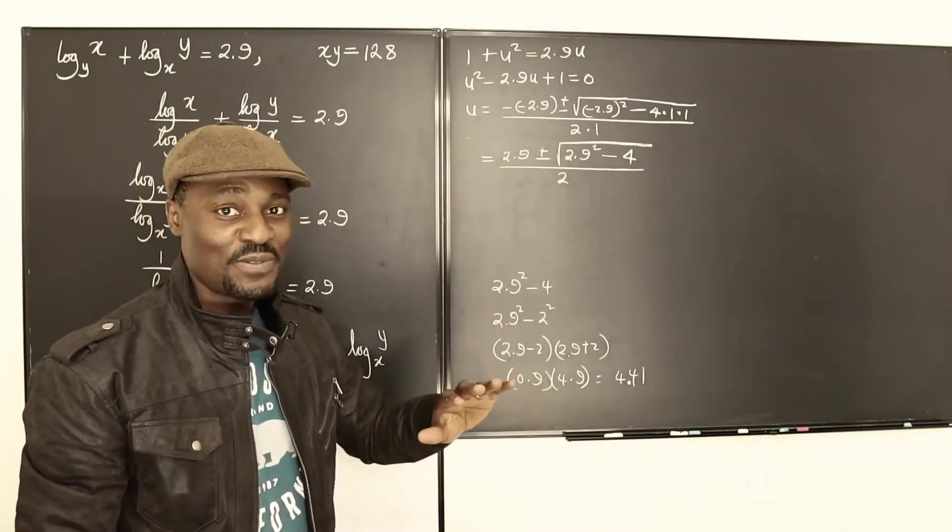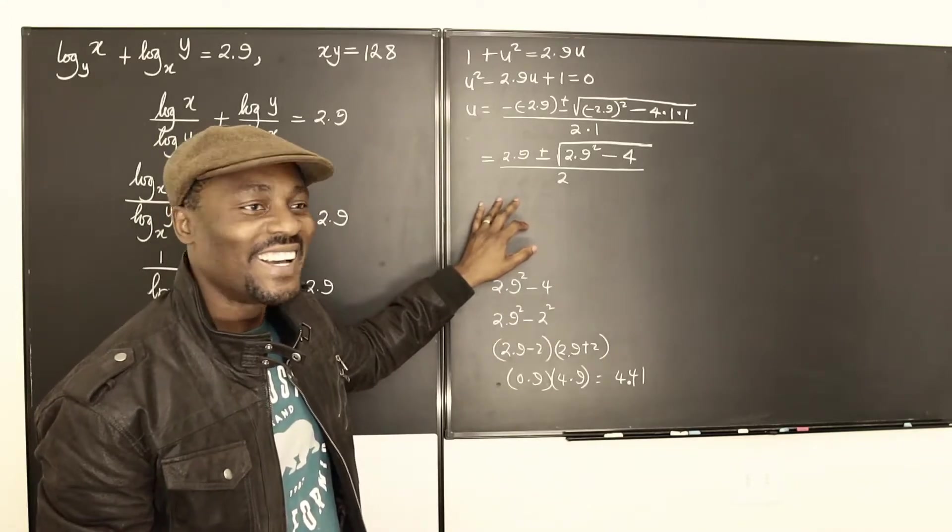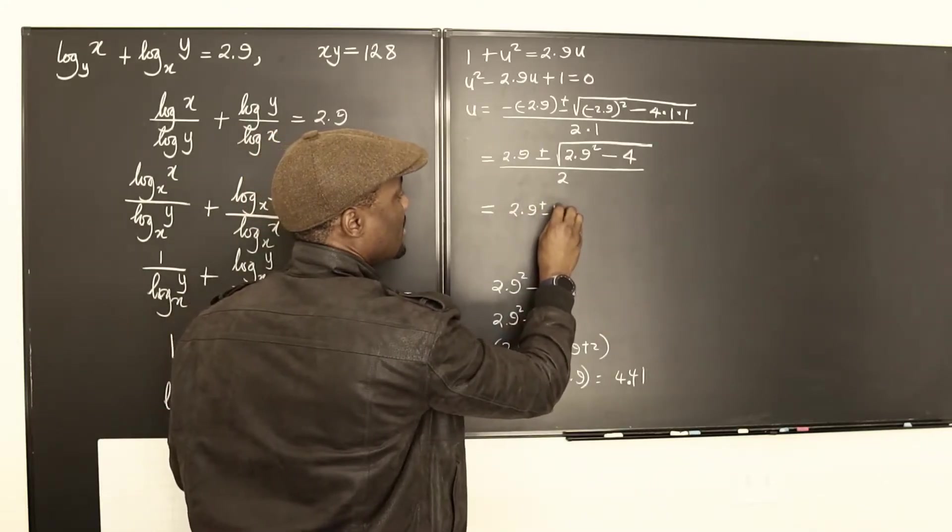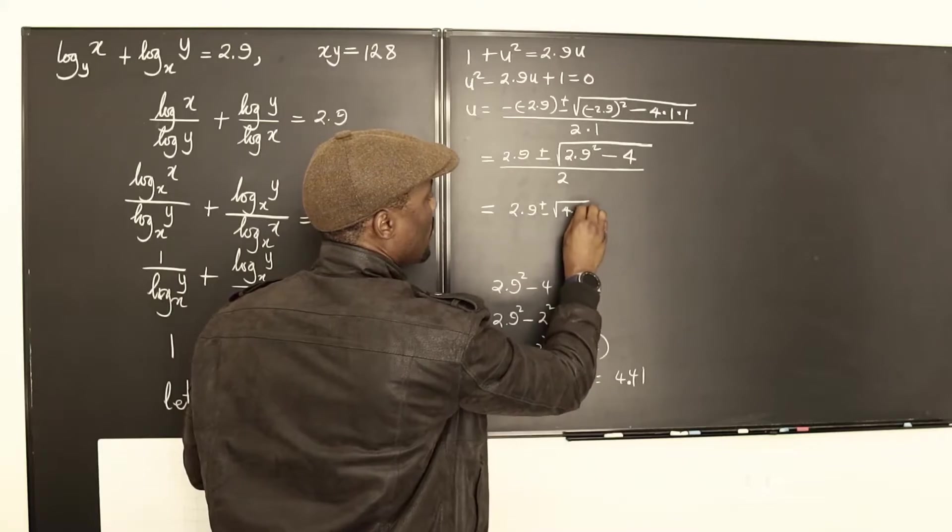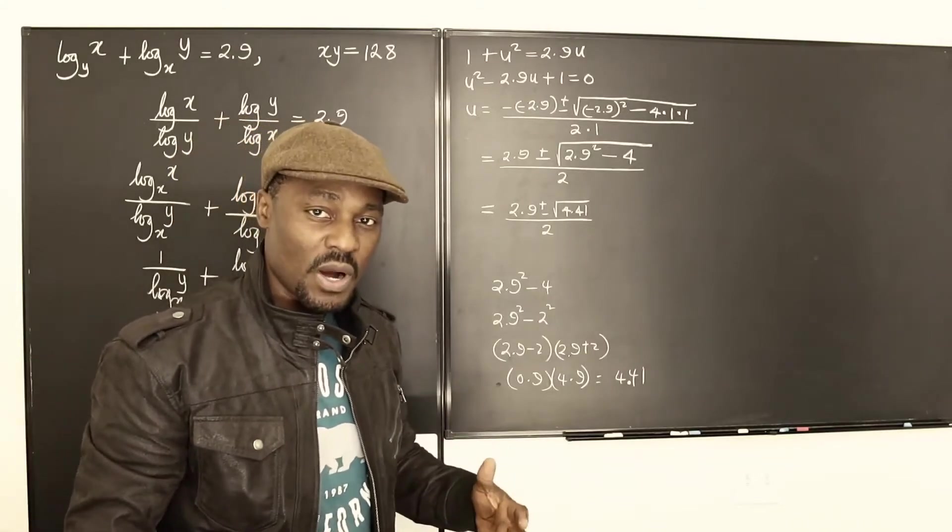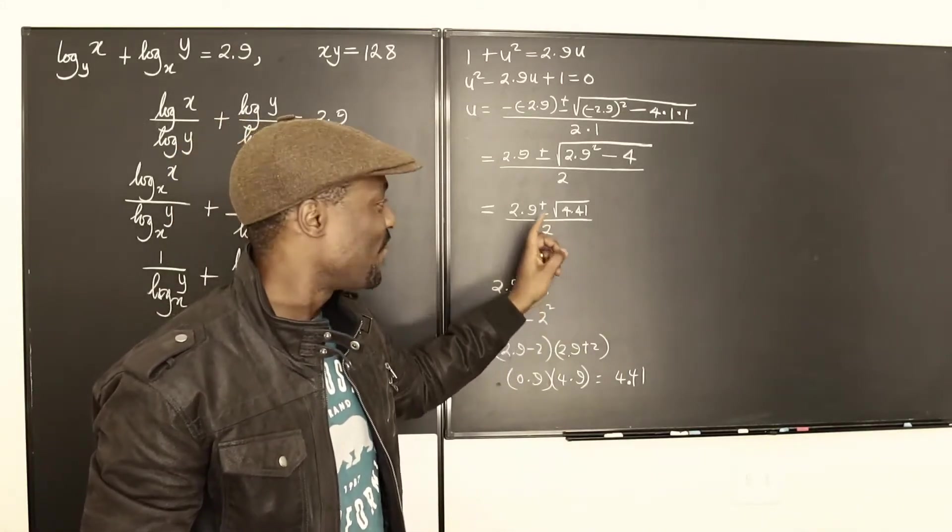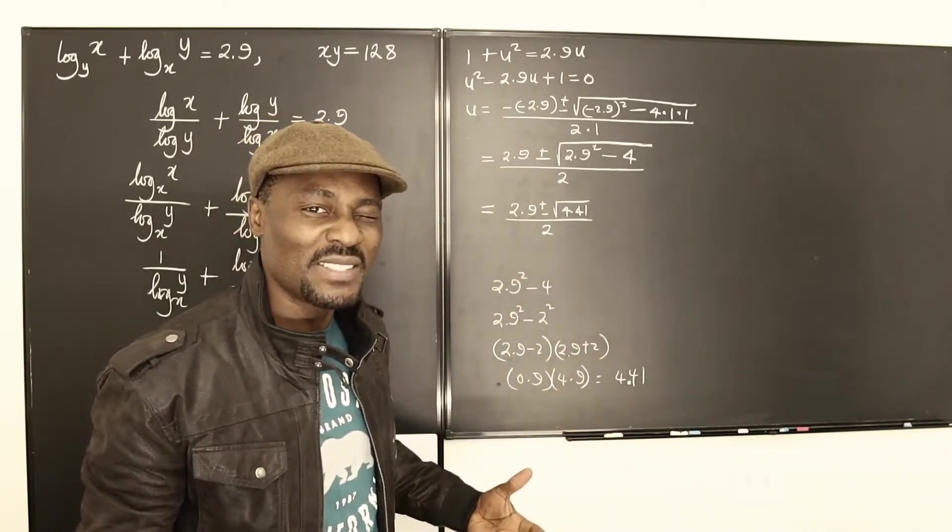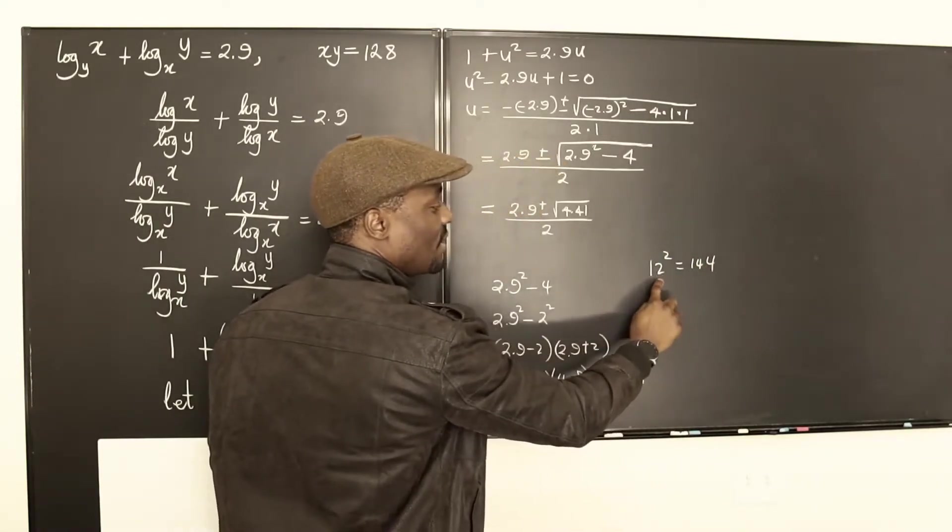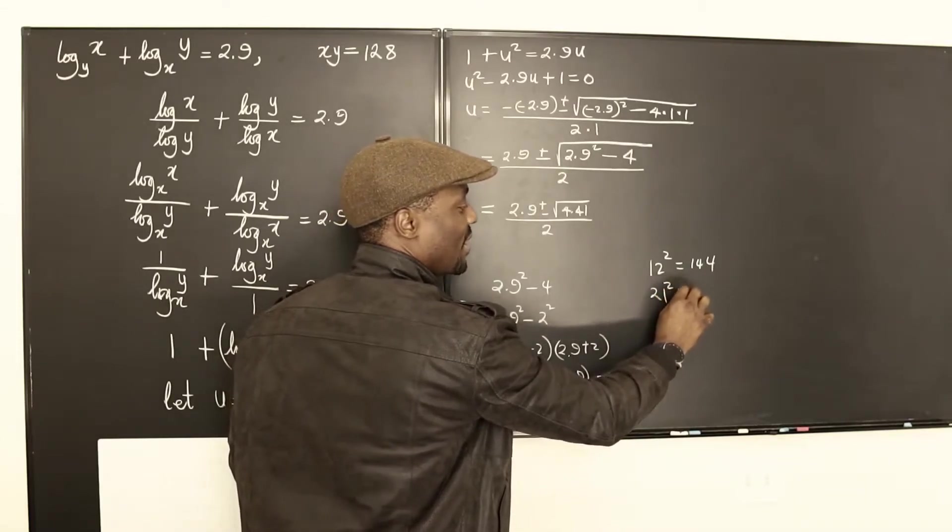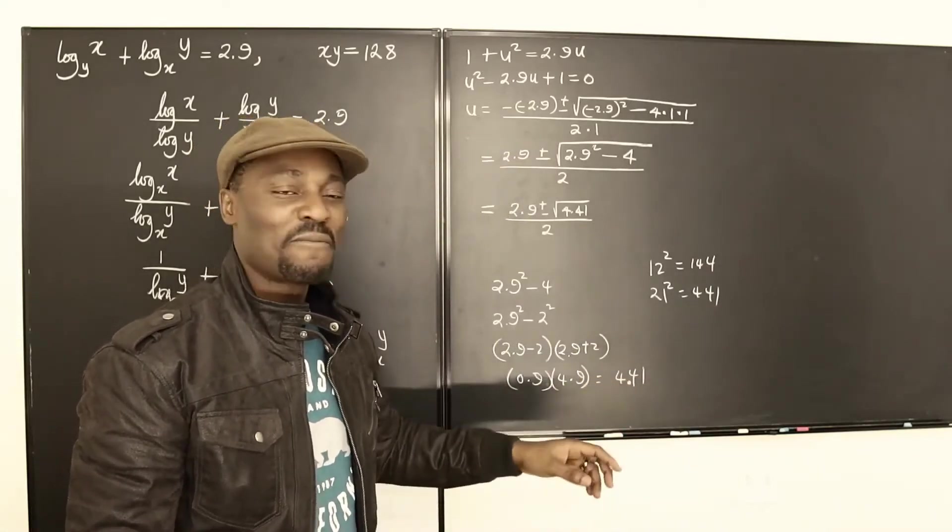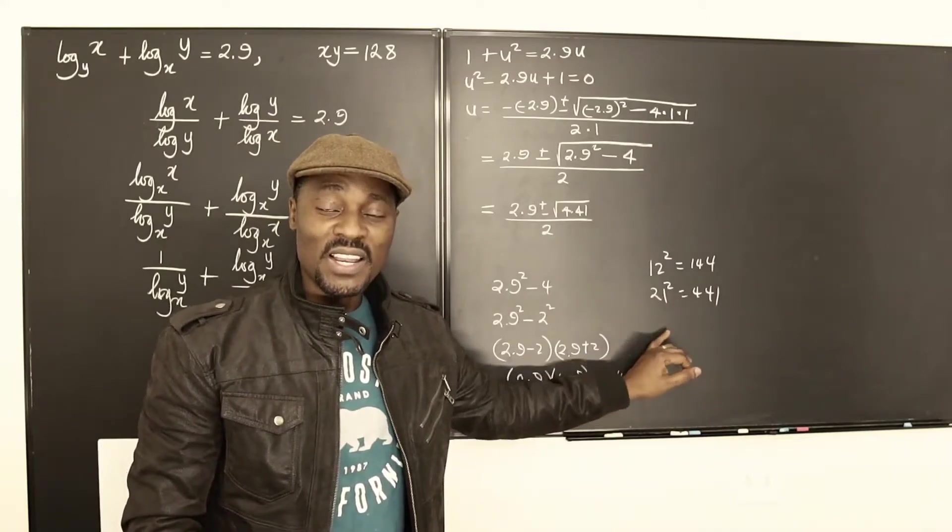So what we have here will eventually be 2.9 plus or minus square root of 4.41 over 2. I know the square root of 4.41 is 2.1, because 441, the square root of it will be 21. How do I remember these things? Well, I know that 12 squared is 144. If you reverse these letters, you're going to have 2.1 squared. You reverse the answer too. It's just an easy way for me to remember it. So I know that. It also works for 31 and 13.